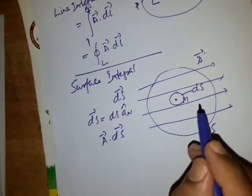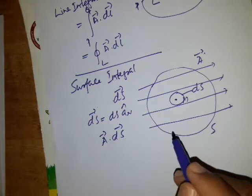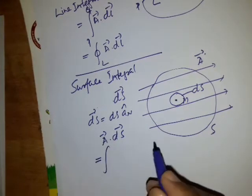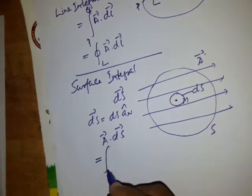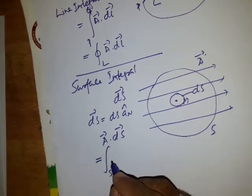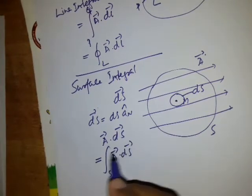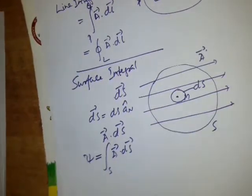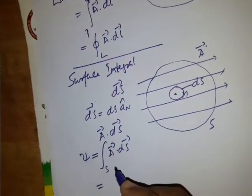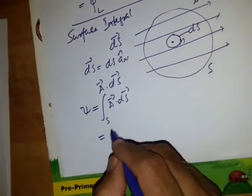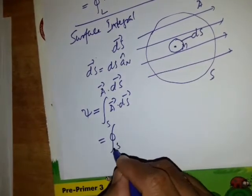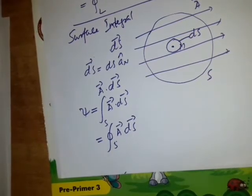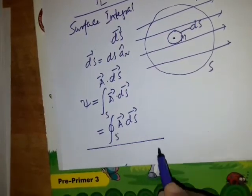And if I integrate this over the surface, then it becomes a surface integral. And here this is integrated over the surface S. And this gives the flux of the vector field A through the entire surface S. So if the surface is a closed surface, then the symbol is like this. So it is over a closed surface S. So this is about surface integral.